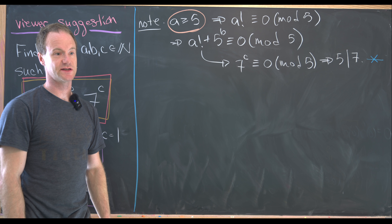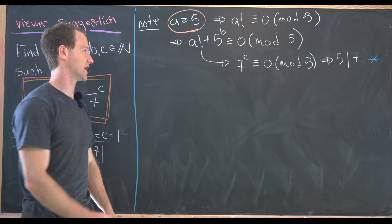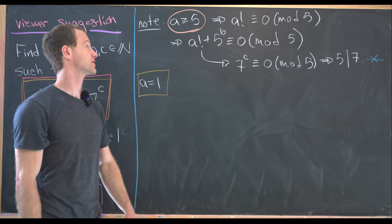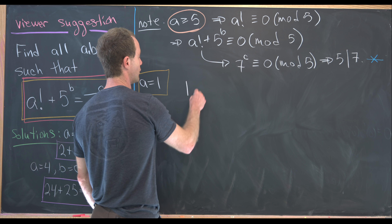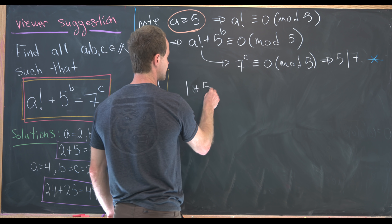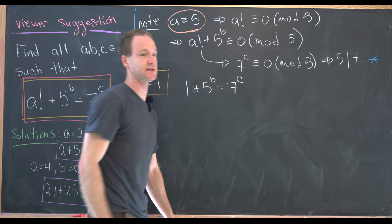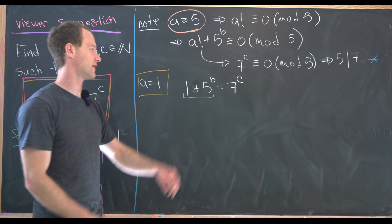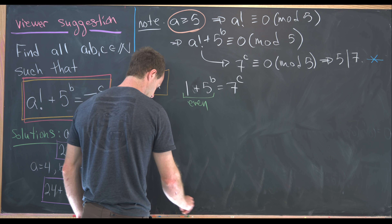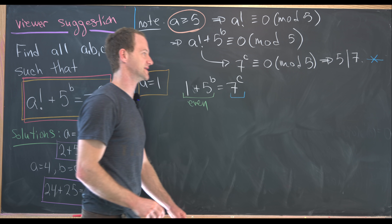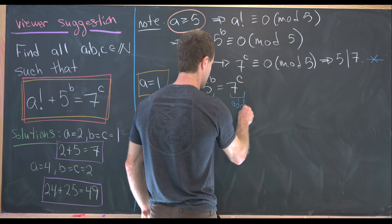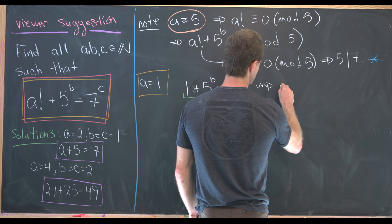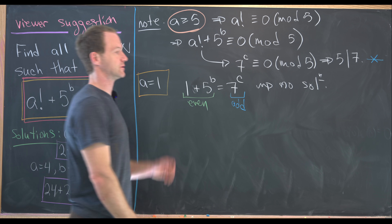Now we run through the remaining cases. The first case is a=1. In this case our equation becomes 1 plus 5^b equals 7^c. But the left-hand side is an odd number plus an odd number, making it even. The right-hand side is a power of an odd number, making it odd. An even number can never equal an odd number — contradiction. So there is no solution when a=1.